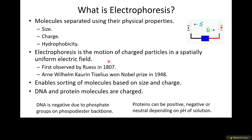Electrophoresis in its simplest form is the motion of a charged particle in a uniform electric field. Something negatively charged moves to the positive electrode; something positively charged moves to the negative electrode. It's been around for just over 200 years and won a Nobel Prize in 1948. It enables separation by size, charge, or both sequentially. DNA is negative due to phosphate groups on its backbone, while proteins can be positive, negative, or neutral depending on sequence and pH.